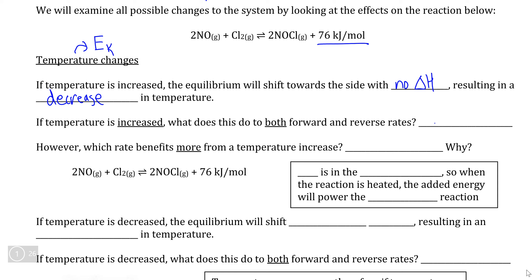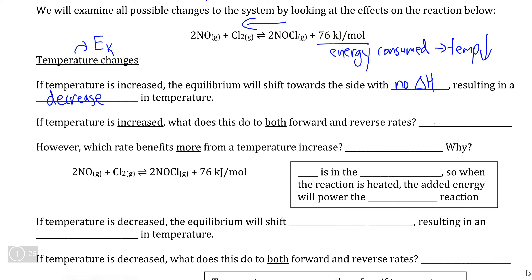Delta H represents the energy that is either consumed by the reaction if it's endothermic, or produced by the reaction if it's exothermic. So if the equilibrium pushes the reaction towards the side without delta H, that means the equilibrium would push toward the reactants and away from the products, because the reverse reaction here is endothermic, and if reversed, energy is consumed, which decreases temperature.